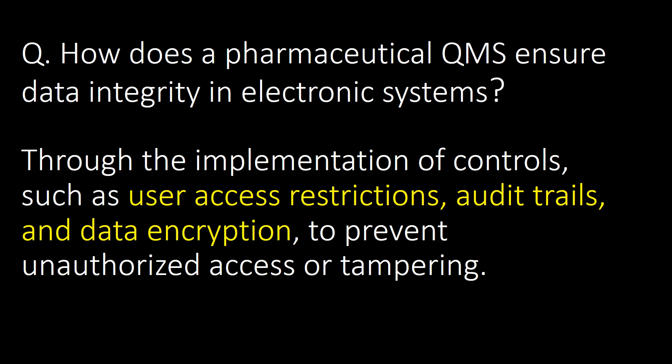How does a pharmaceutical QMS ensure data integrity in electronic systems? Data integrity in electronic systems is ensured through the implementation of controls such as user access restrictions, audit trails and data encryption to prevent unauthorized access or tampering.